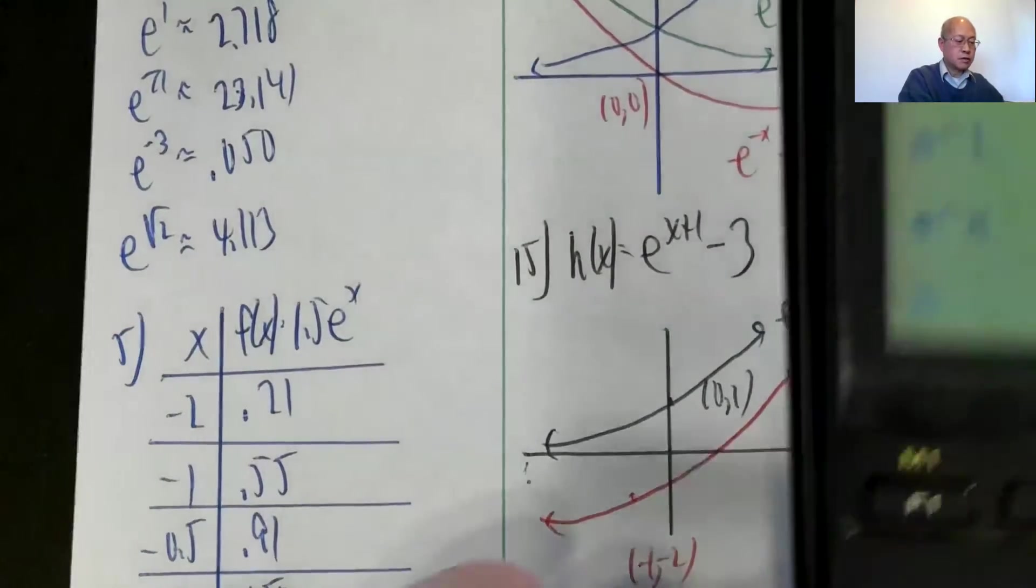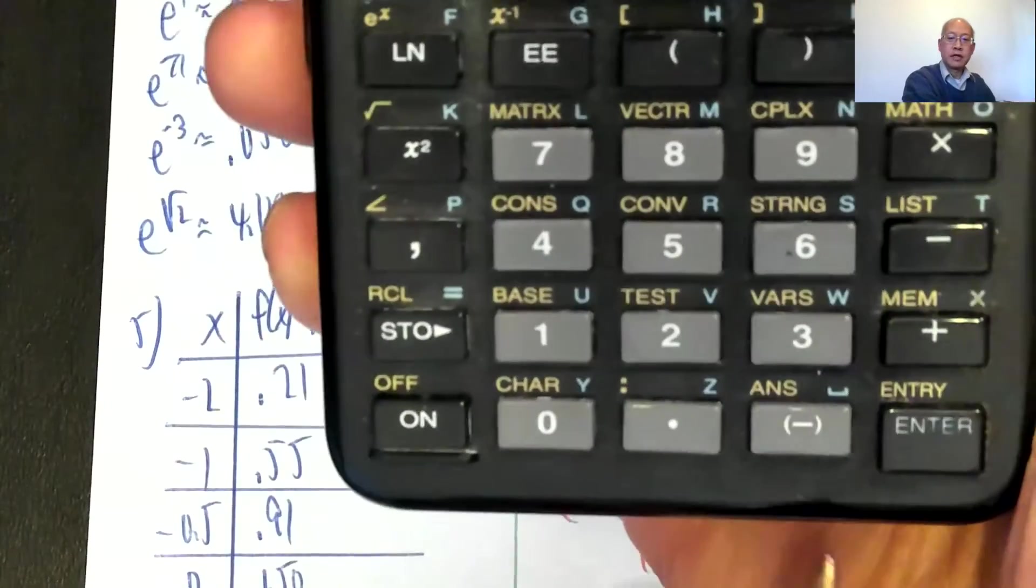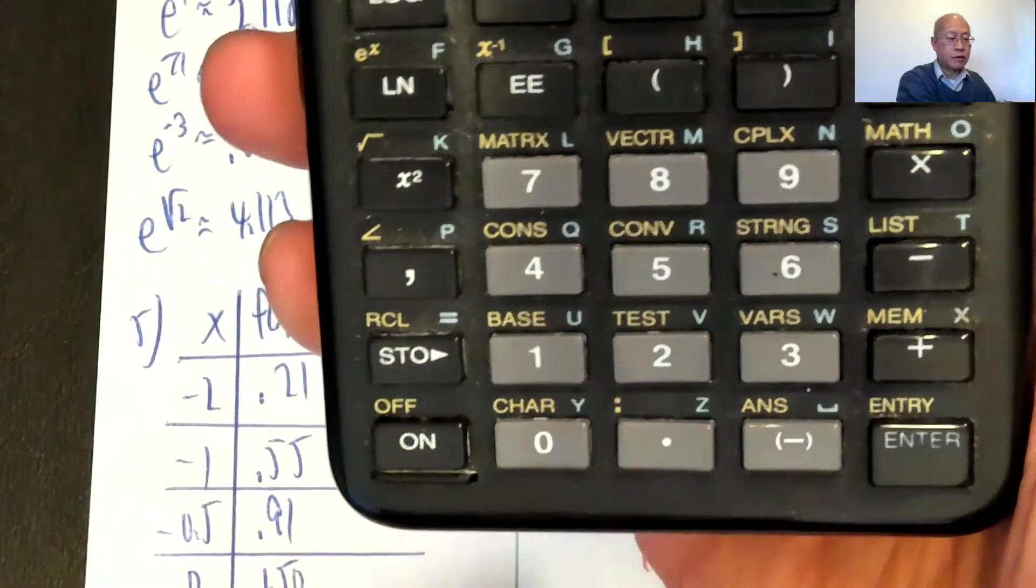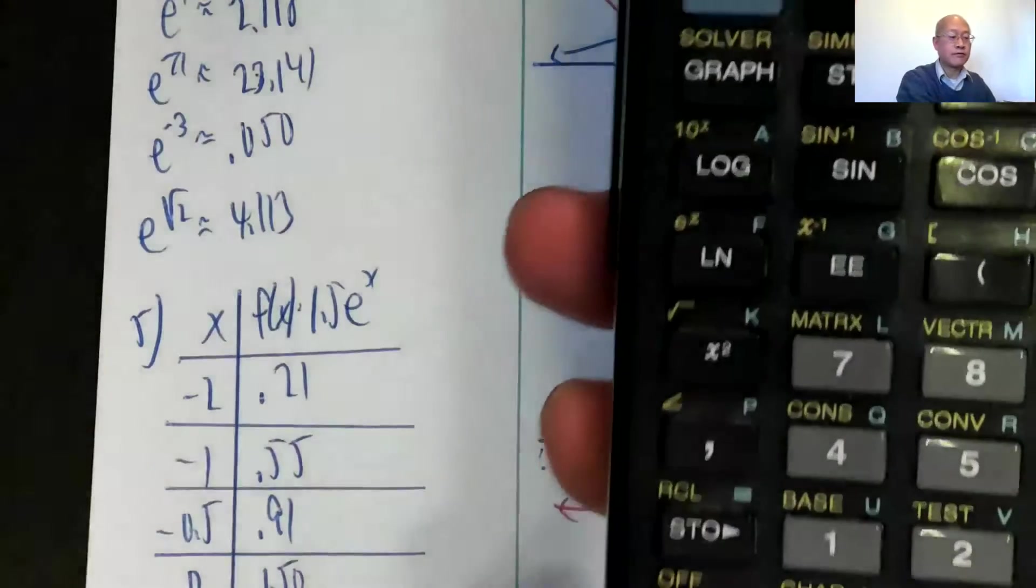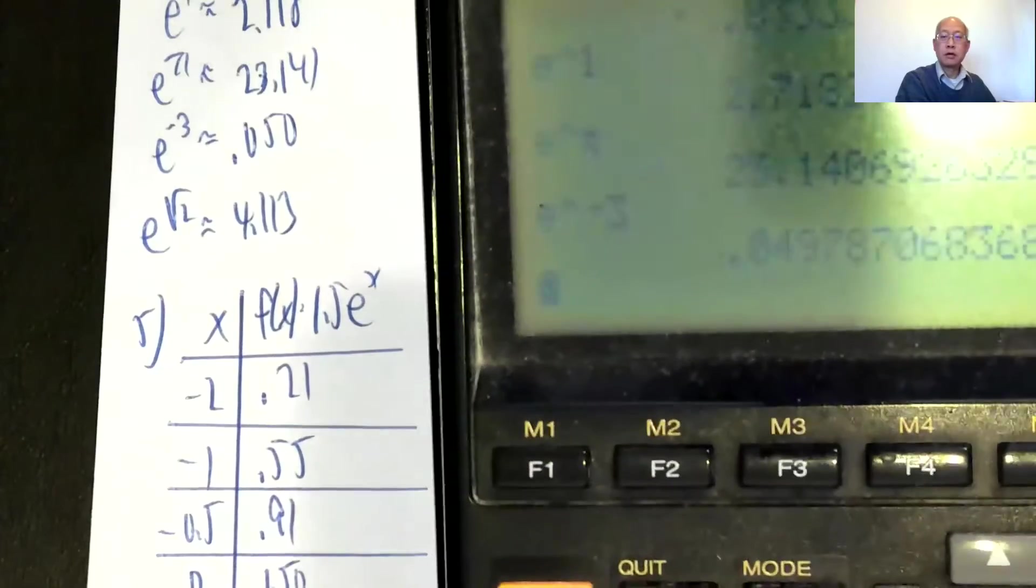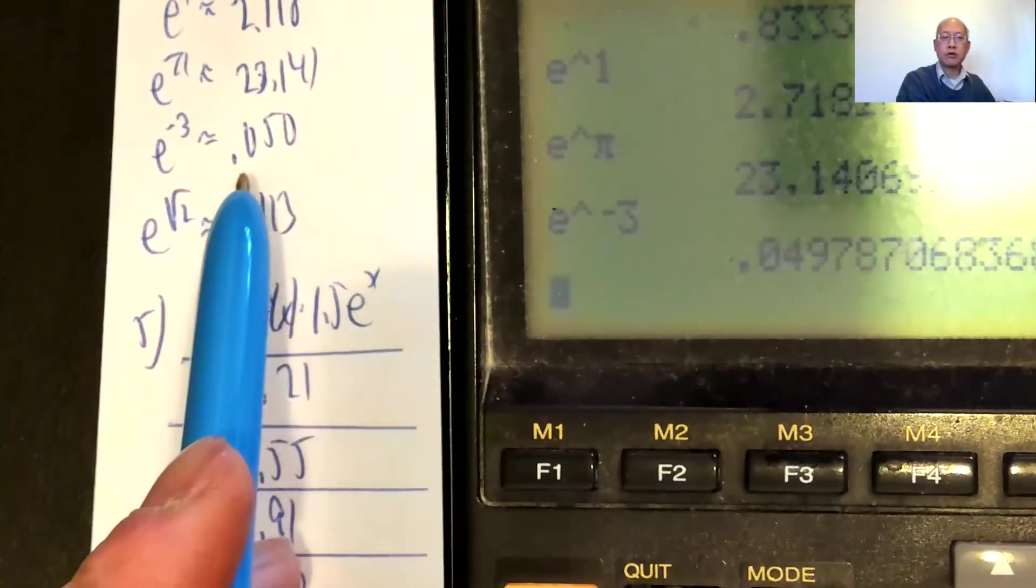e to the negative third, so second function, e exponent negative. On my calculator, the negative is down here, be careful, it's not this one, this is the subtraction button, the negative button is this one, so what do I want, negative 3. So e to the negative 3, 0.0497, to three decimal places rounded off as 0.050.